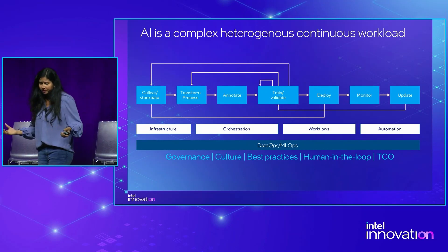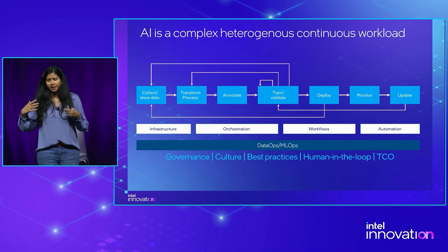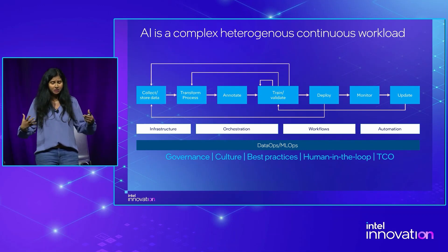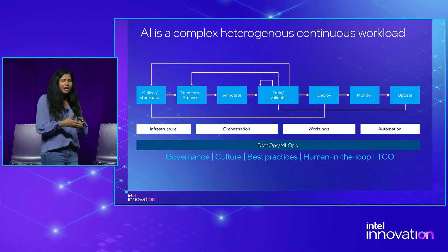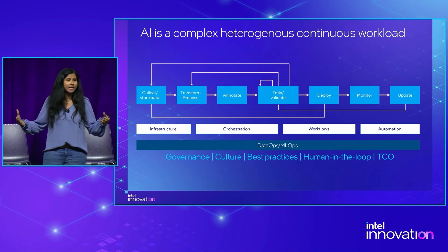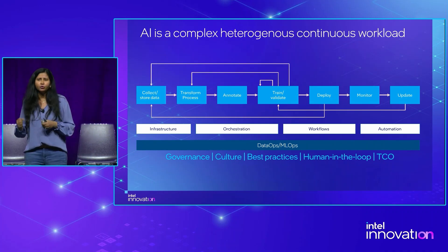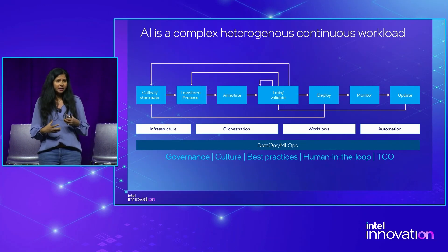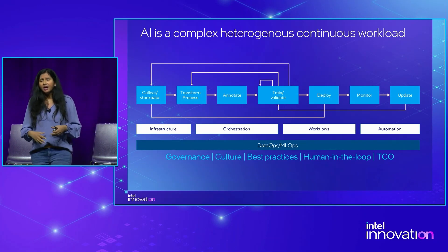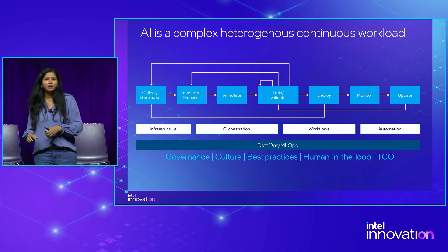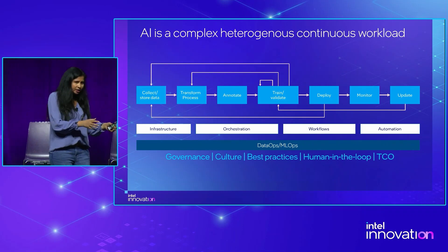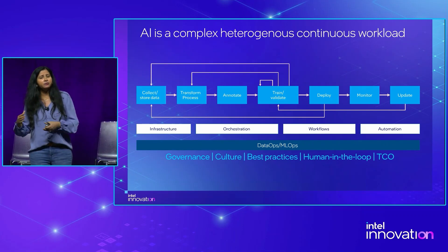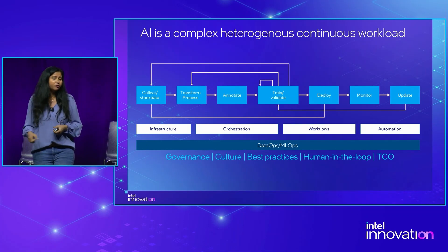Once you have identified the problem and figured out whether to use deep learning, probabilistic methods, or whatever the methods are to get meaningful results, AI itself is a heterogeneous, complex, and continuous process. I need to collect the data, curate the data, and annotate the data. Once I have the data, I need to train it, then deploy it. And once I have deployed, I have to figure out: are my predictions close to what I trained for? Is there a drift? If there is a drift, do I need to retrain? So it's a continuous iterative process.